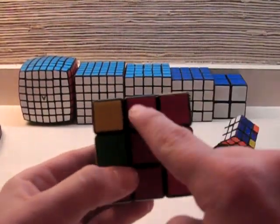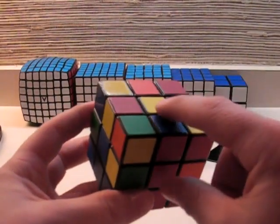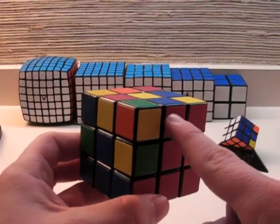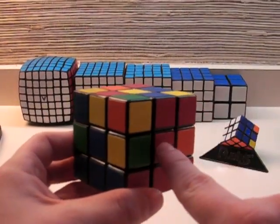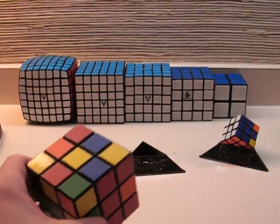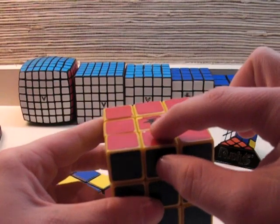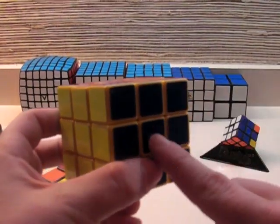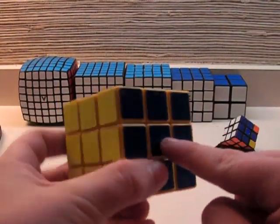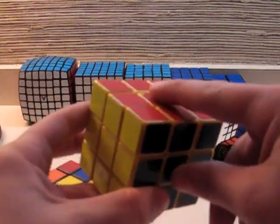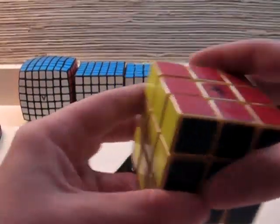So right here, I happen to have one already matched up. This is red and blue. Now, red and blue goes between the red and blue centers. Because if you look on a solved cube, red and blue right here is only in the solved position when between the blue center and the red center. So, it needs to match up with its correct centers.